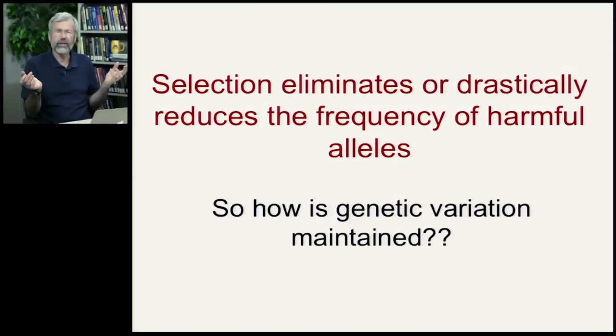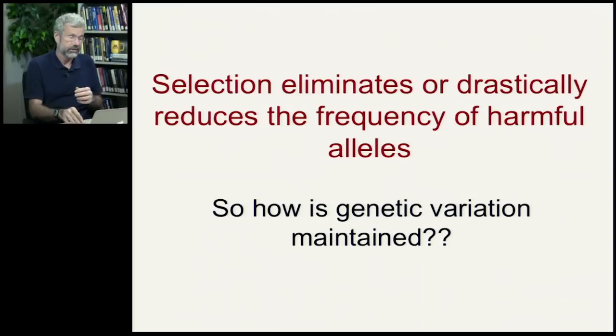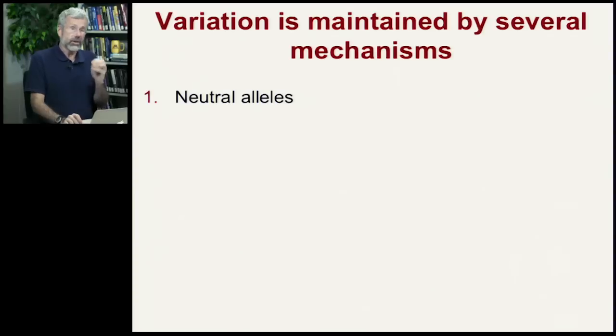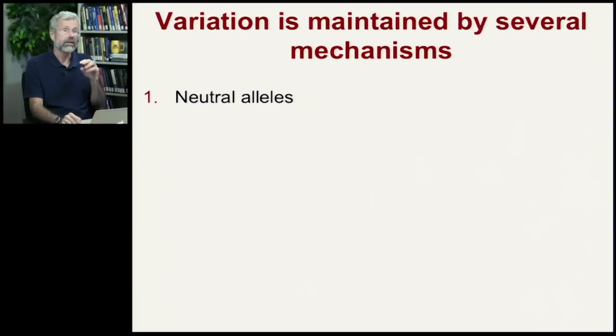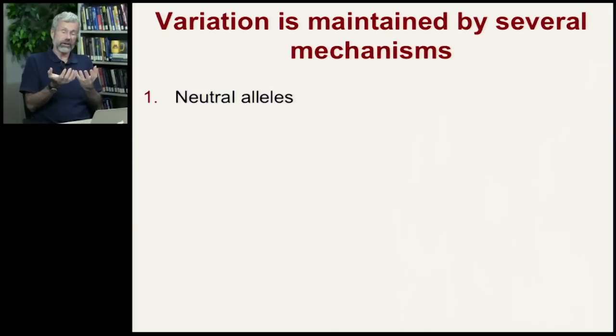So how is genetic variation actually maintained if there is this strong selection? It turns out there are a number of different mechanisms that perpetuate alternative alleles at a particular locus. At a given locus, a population may have several different alleles — some confer the favored phenotype, others don't. But in some cases we find alternative alleles at a locus because they're actually neutral — there is no selective advantage.